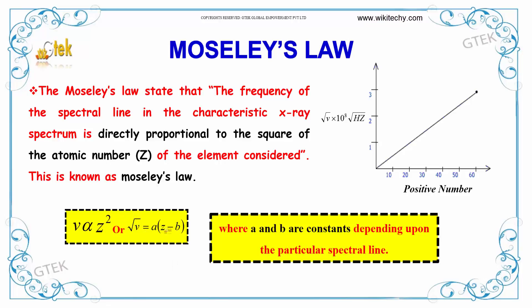√v is equal to a(Z minus b), where a and b are constants and it depends upon the particular spectral line. This is referred to as Moseley's law.